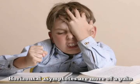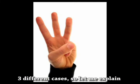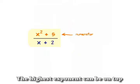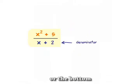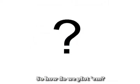Horizontal asymptotes are more of a pain, three different cases, so let me explain. The highest exponent can be on top or the bottom, or even on both, so how do we plot them?